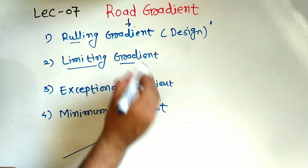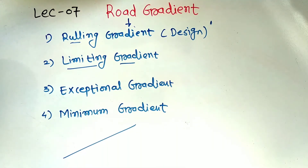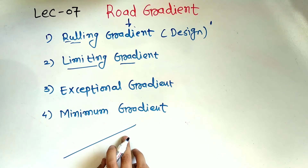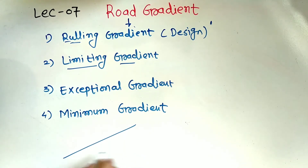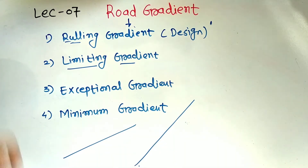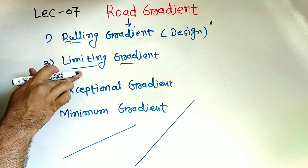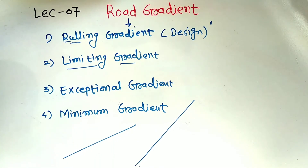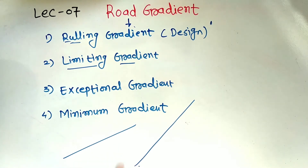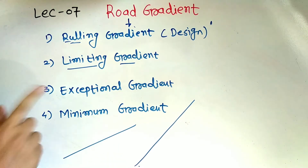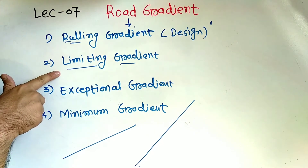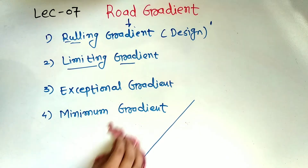Now let's talk about the limiting gradient. The limiting gradient means a gradient that is steeper than the ruling gradient. When we cannot adopt the ruling gradient due to the topography of the terrain, we have to use the limiting gradient. Note that the limiting gradient is always steeper than the ruling gradient.